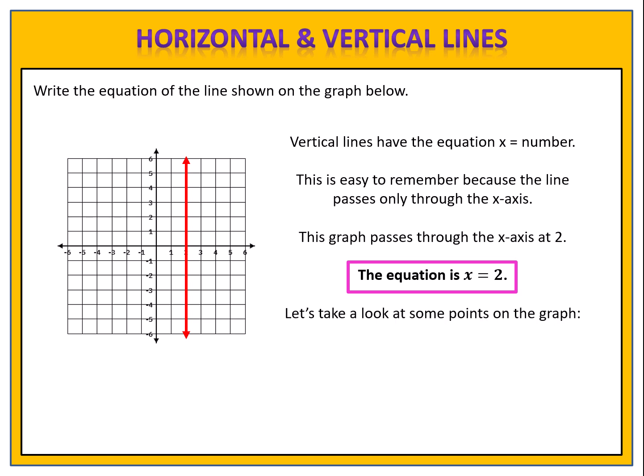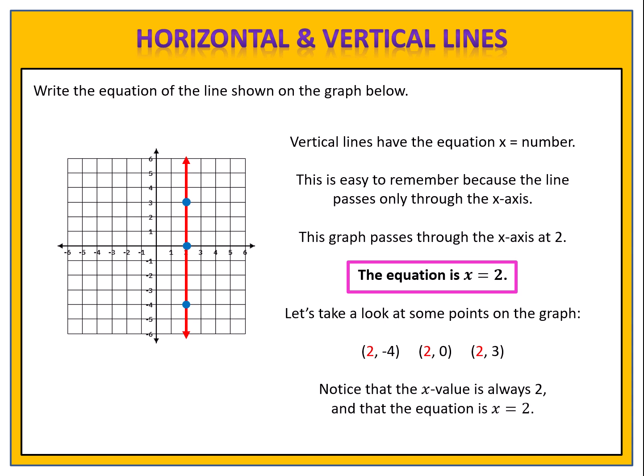Let's take a look at some points on the graph: 2 comma negative 4, 2 comma 0, and 2 comma 3. Notice what all of these points have in common — in all cases the x-value is always 2, and the equation is x equals 2. When we have the equation x equals 2, it means that x is always 2.